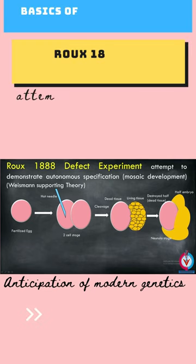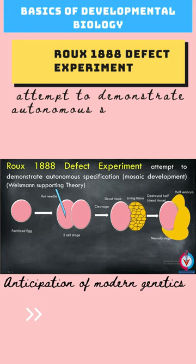Roux, a scientist, did a developmental experiment in 1888. He had a fertilized egg. When it divided into two cells, he killed one cell.